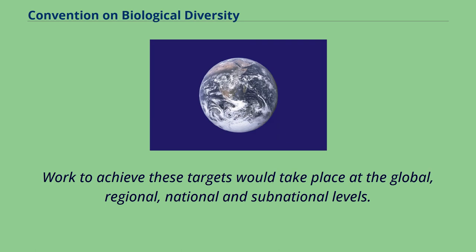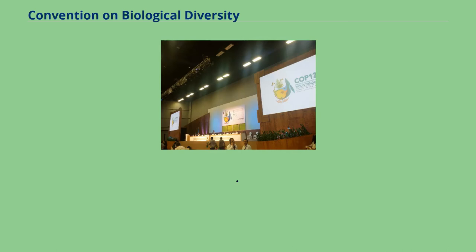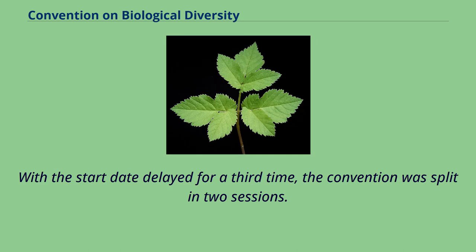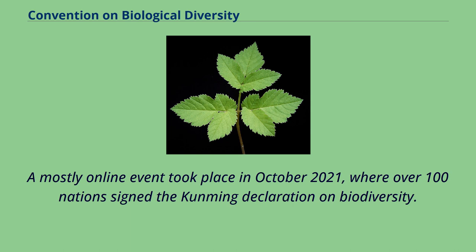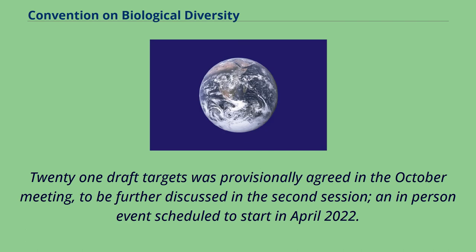The 15th Meeting of the Parties, taking place in Kunming, China, was originally scheduled for 2020, but was postponed several times due to the COVID-19 pandemic. With the start date delayed for a third time, the convention was split into two sessions. A mostly online event took place in October 2021, where over 100 nations signed the Kunming Declaration on Biodiversity. The theme of the declaration was ecological civilization: building a shared future for all life on Earth. 21 draft targets were provisionally agreed in the October meeting, to be further discussed in the second session, an in-person event scheduled to start in April 2022.